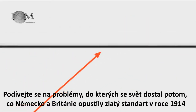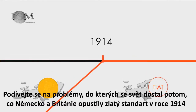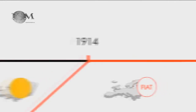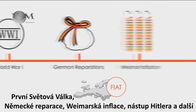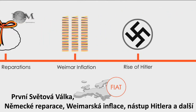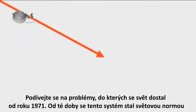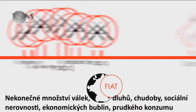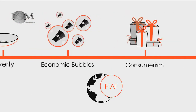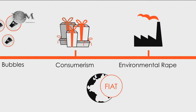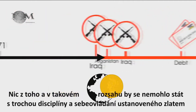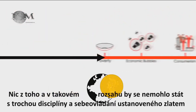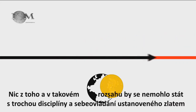Look at the mess the UK and Germany got the world into after leaving the gold standard in 1914: World War I, German reparations, Weimar inflation, the rise of Hitler, and so on. Look at the mess the world has got itself into since 1971, when this fiat system became the global norm: an endless sea of wars, debt, poverty, social inequality, economic bubbles, rampant consumerism, and environmental rape. None of which could ever have happened to anything like the same extent, with that little bit of discipline and restraint imposed by gold.